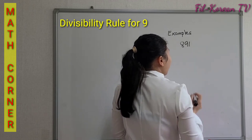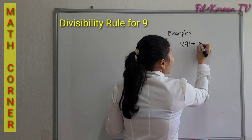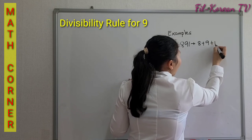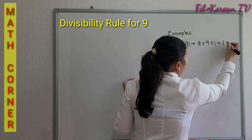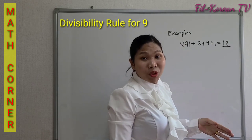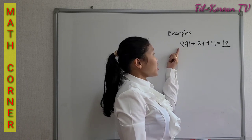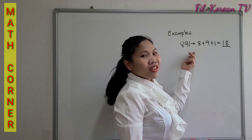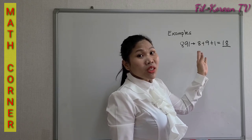891. Just add the digits: 8 plus 9 plus 1 equals 18. 18 is a multiple of 9, so 891 is divisible by 9. As you can see, the rule for 9 is almost the same as the rule of 3.